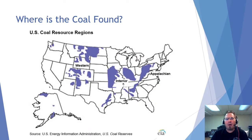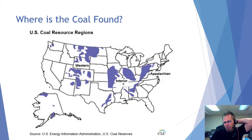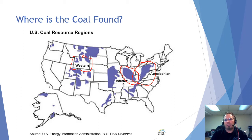Coal is found all over the world — huge mines exist in Russia and Africa. In the United States, coal is primarily found in the Appalachian Mountains, the Illinois Basin, and in the western part of the country. Wyoming has huge coal mines. The trains hauling coal out there can have around 10 engines and stretch several miles long. But when this stuff runs out, it runs out.